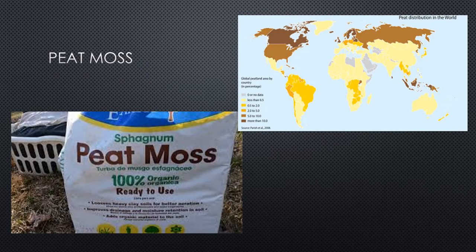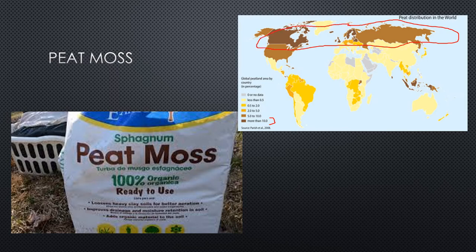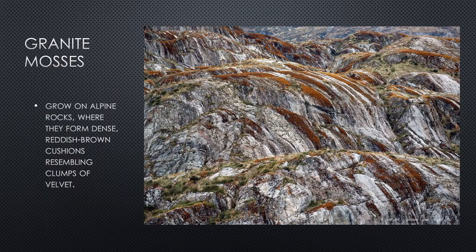Looking at a distribution map, the largest populations of sphagnum peat moss are in Canada and the northern section just under the Arctic Circle. Granite moss grows on alpine rocks at high elevation and tends to form that reddish-brown look on rocks.